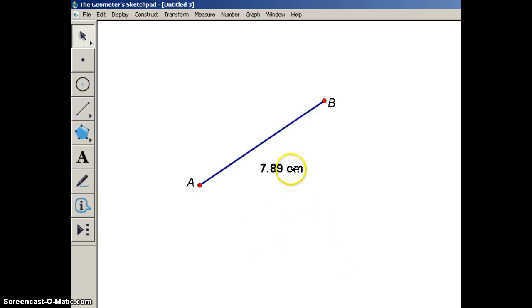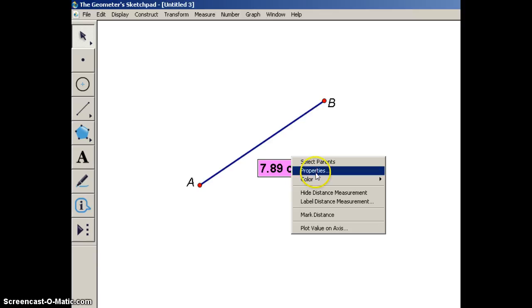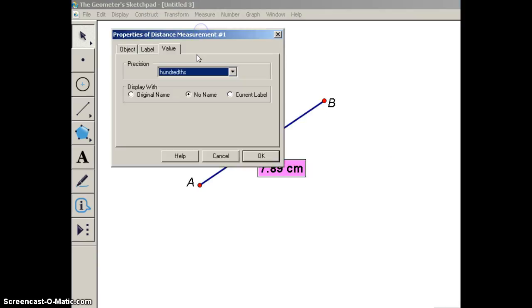So what you would do is right click on the measurement, select properties, and change it to whatever you want.